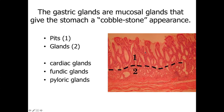Looking at the glands themselves, we have the lumen at the top with mucus-secreting cells and an enlarged region called gastric pits, then an extension going down into the mucosa with a smaller lumen — the gastric glands — and then the submucosa underlying that. Depending upon the region of the stomach, we have cardiac, fundic, or pyloric glands corresponding to the cardiac, fundic or body, and pyloric regions of the stomach.